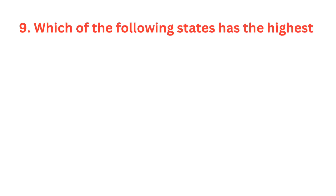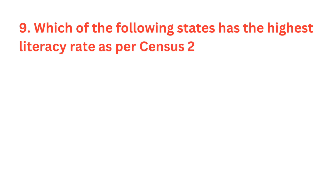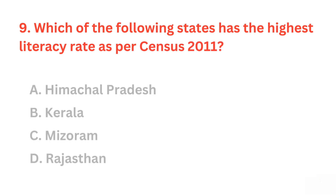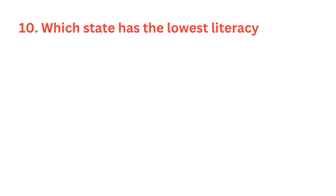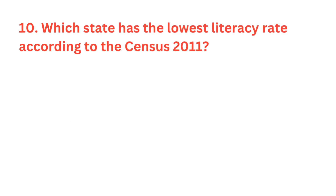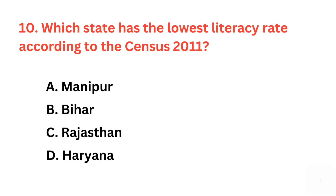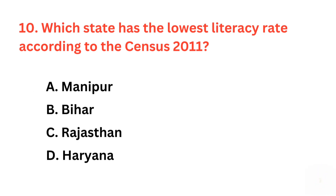Which of the following states has the highest literacy rate as per census 2011? The correct answer is option B, Kerala. Which state has the lowest literacy rate according to the census 2011? The correct answer is option B, Bihar.